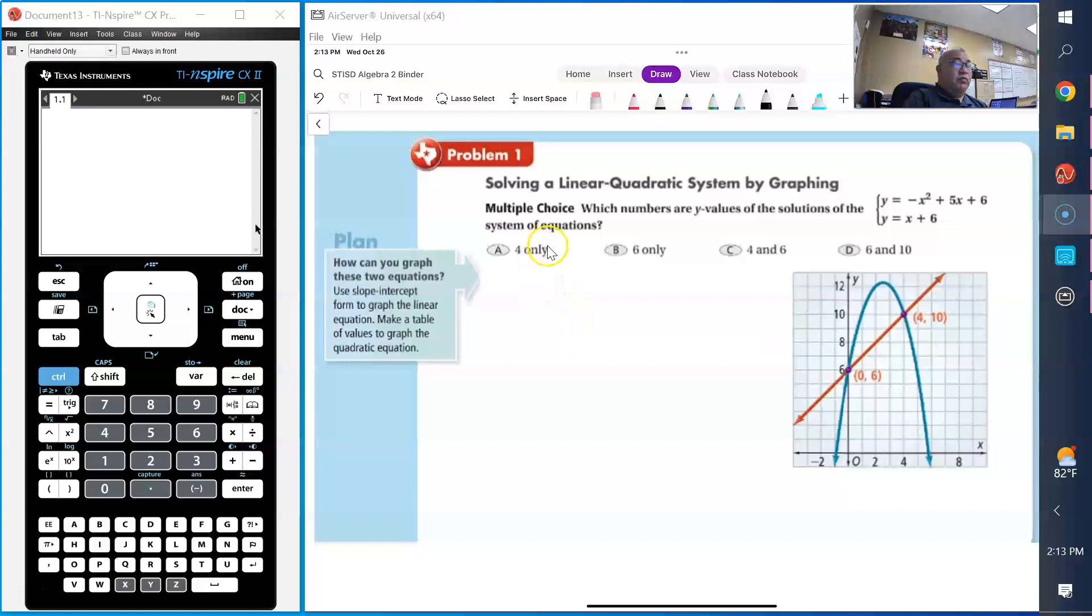For problem one, it asks which numbers are the y values of the solutions of the system of equations. They have already graphed y equals negative x squared plus 5x, and the linear equation is shown here. We know it intersects at 0 comma 6 and at 4 comma 10. They're asking for the y values, which are 6 and 10. So your answer is D.